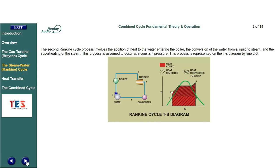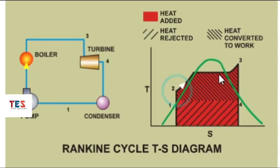The second Rankine cycle process involves the addition of heat to the water entering the boiler, the conversion of the water from a liquid to steam, and the superheating of the steam. This process is assumed to occur at a constant pressure and is represented on the TS diagram by line 2-3.